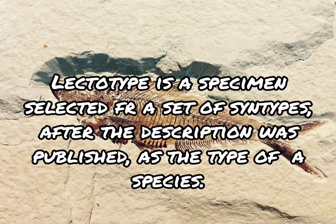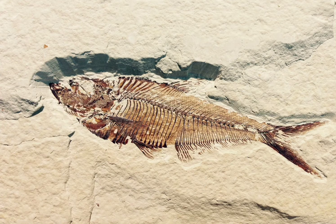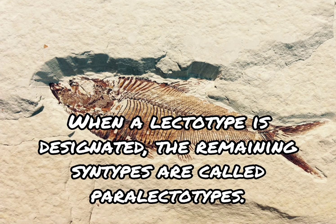Lectotype is a specimen selected from a set of syntypes after the description was published, as the type of a species. When a lectotype is designated, the remaining syntypes are called paralectotypes.